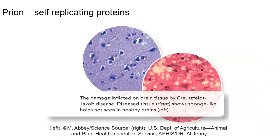We also have what we call prions. Prions by definition are self-replicating proteins — a prion will go and replicate itself. The prion protein is actually produced by the human body in nerve cells. It is excreted to the outside of the cell where it acts as some sort of receptor, and after a while it's brought back in, broken down, and there's no problem.